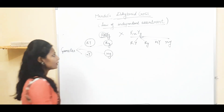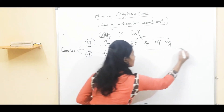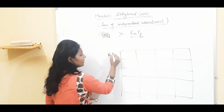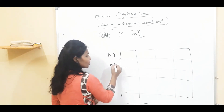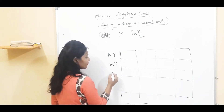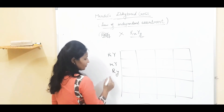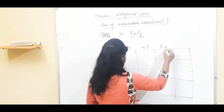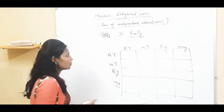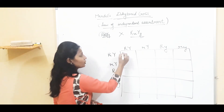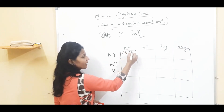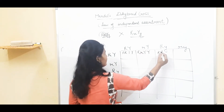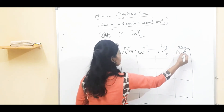After this, we make a Punnett square. The Punnett square will have 16 boxes. We write all four gametes — capital RY, small r capital Y, capital R small y, small r small y — along both axes and fill the boxes by combining each gamete pair.